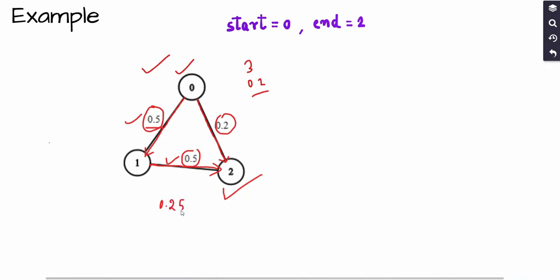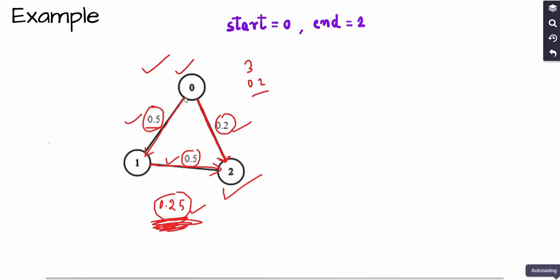That gives us 0.25 for the path through node 1. Comparing the two paths: 0.25 is greater than 0.2 (the direct edge from 0 to 2). Therefore, the answer for this test case is to move from 0 to 1, then from 1 to 2, with a maximum probability of 0.25.